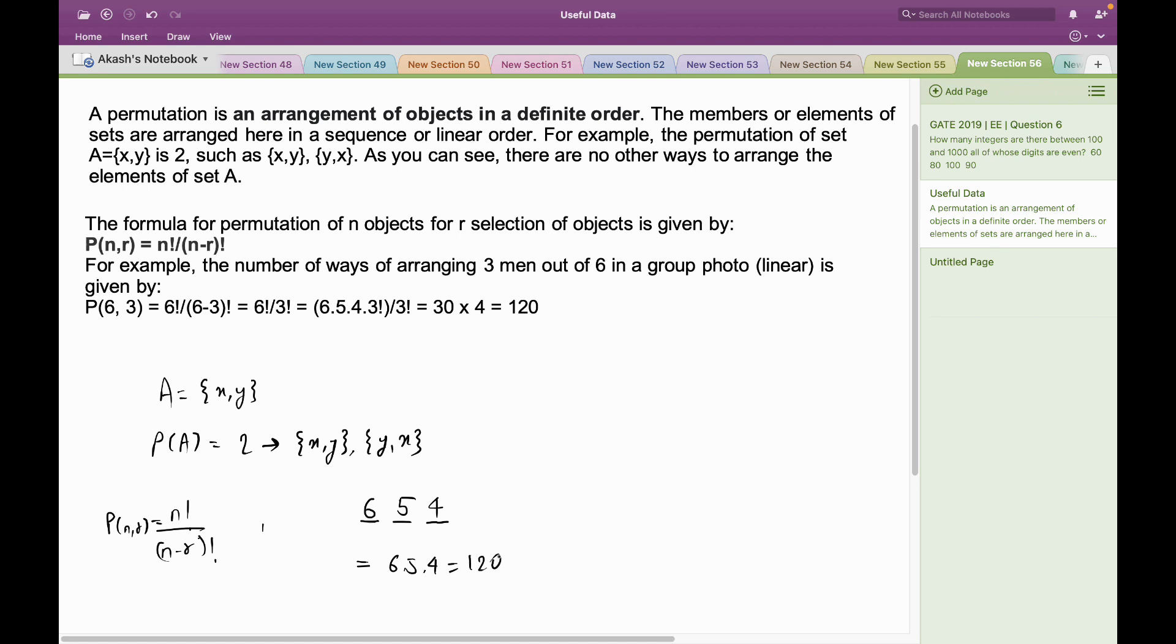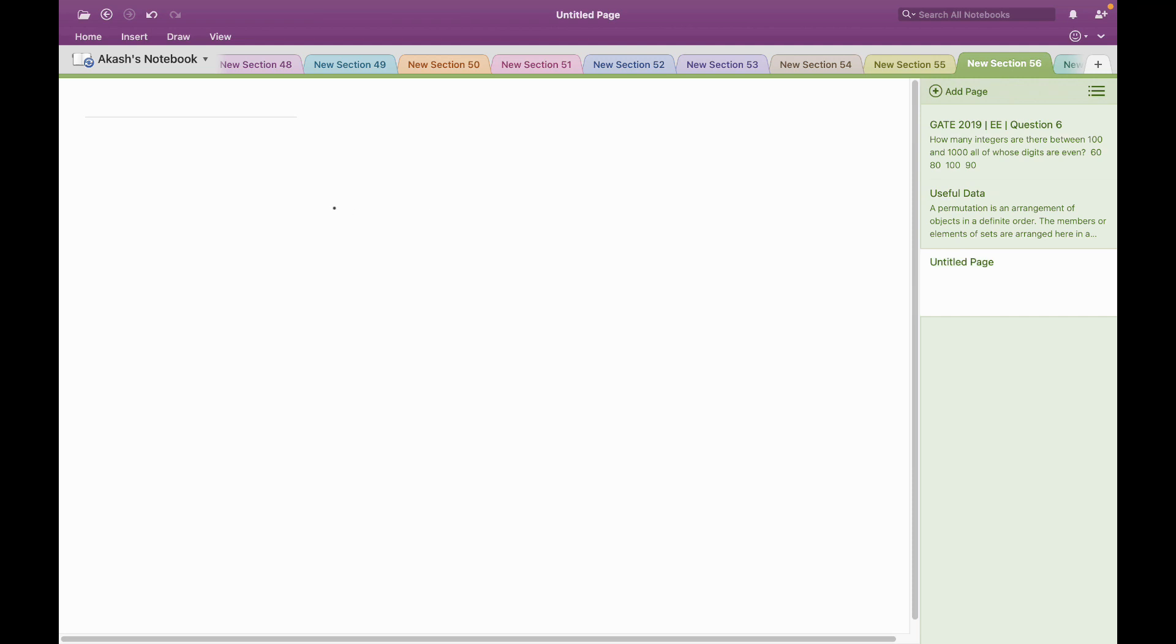Let's use this idea to solve the problem. We have been given a range from 100 to 1000. If I take the 100 series, the first digit 1 is fixed, and it doesn't matter what numbers I take in the units and tens place—any number would have at least one odd digit, which is 1. So we are going to reject the 100 series.